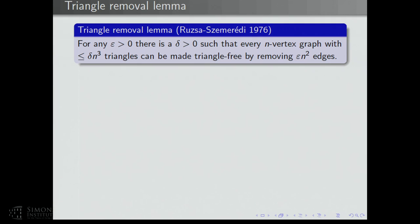Now we go to the first application: the triangle removal lemma of Ruzsa and Szemerédi. This says that any graph with few triangles can be made triangle-free by removing few edges. For any epsilon > 0, there's a delta > 0 such that every n-vertex graph with at most delta·n³ triangles can be made triangle-free by removing at most epsilon·n² edges. This explains why a graph has few triangles: it's actually close to a triangle-free graph — the only way to have few triangles is to essentially be a triangle-free graph plus a few extra edges.